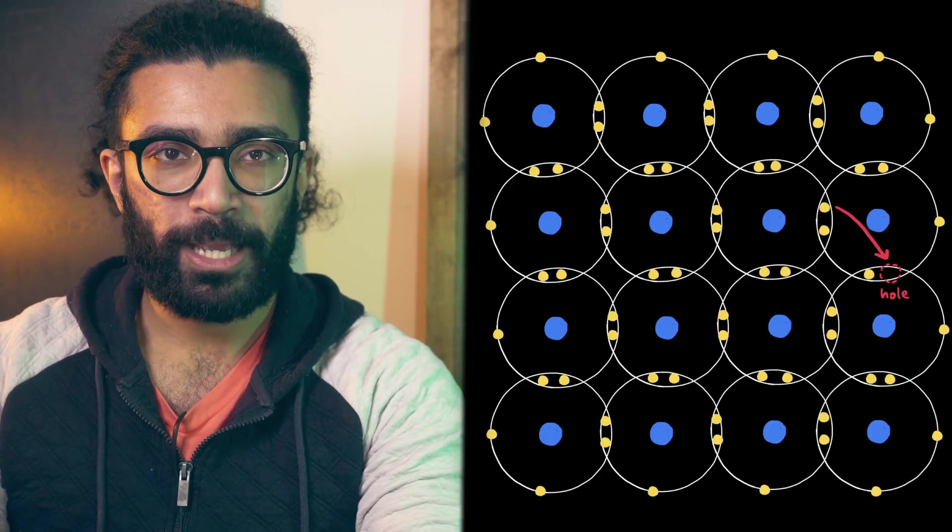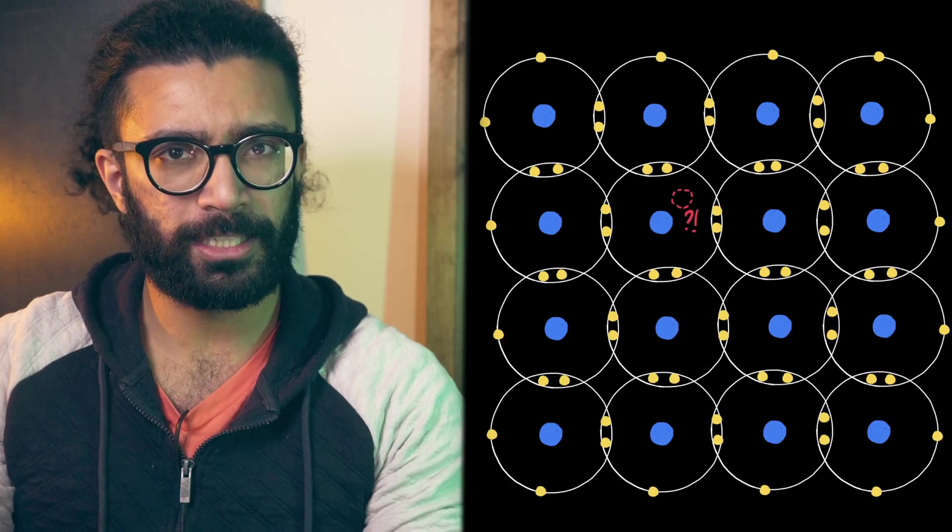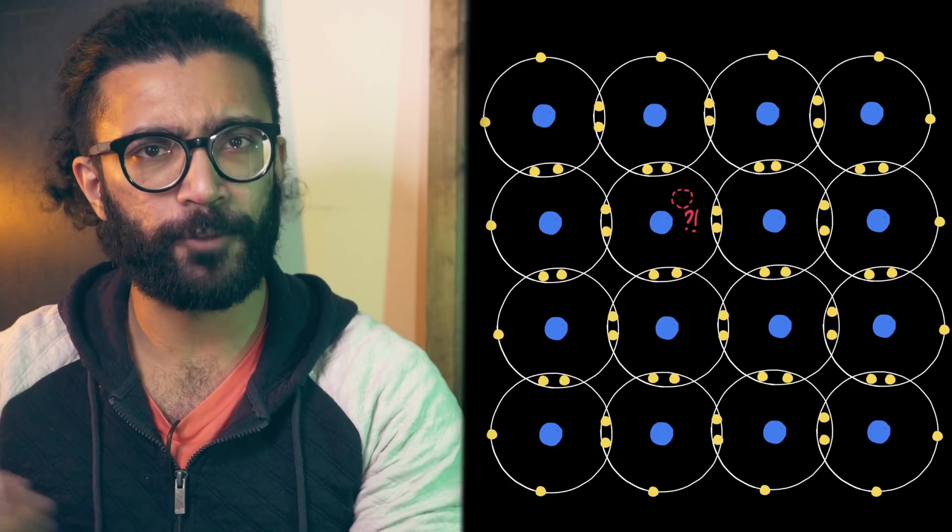Now, obviously, it doesn't make sense for a hole to exist on a small scale. It can't exist where there's no possibility of an electron being present in the first place. But if we zoom out, it's very helpful to study the motion of holes within a solid.